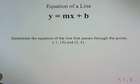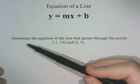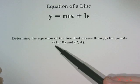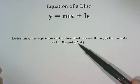Equation of a line. So our question here says determine the equation of the line that passes through the points negative one and ten and two and four.